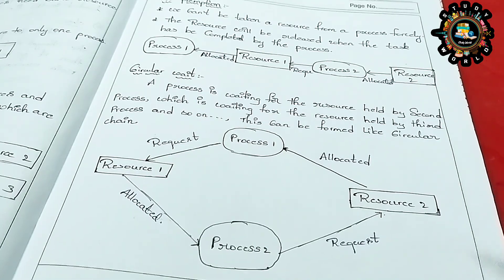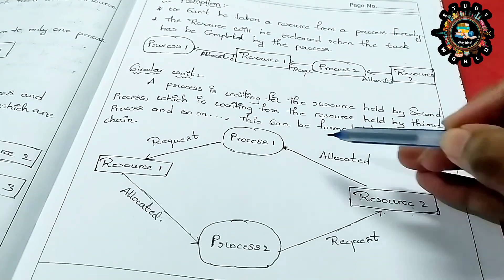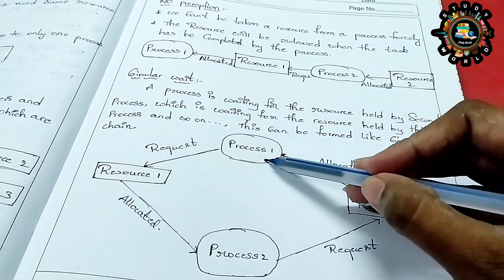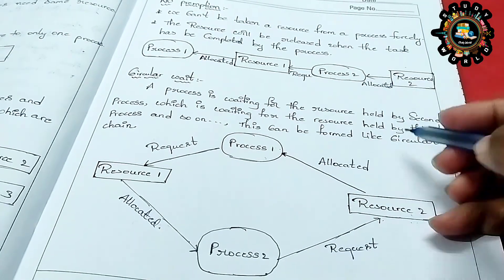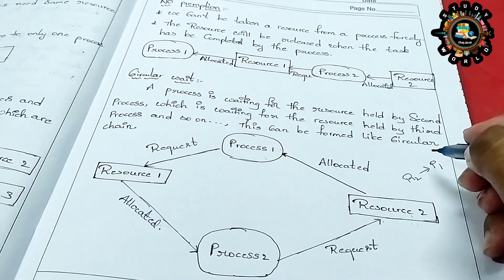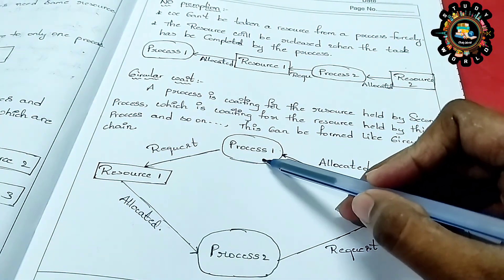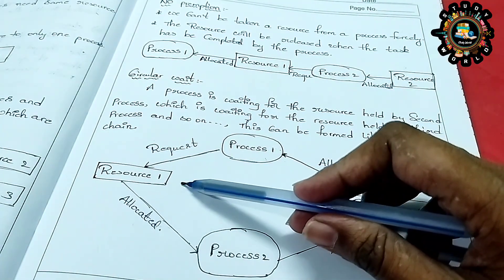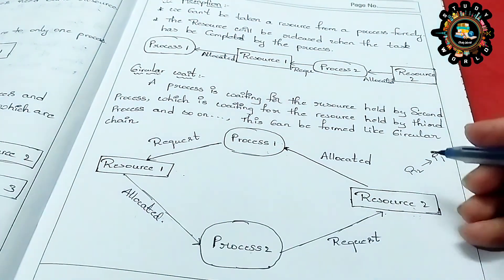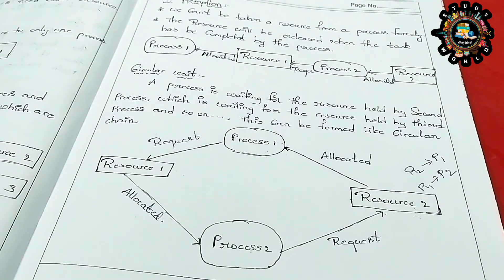Let's clarify this with an example. There is a resource R1 and a process. Resource 2 is allocated to process 1. What is the request from process 1? R1. But resource 1 is already allocated to process 2. Resource 1 is allocated to process 2 — that is a chain link.